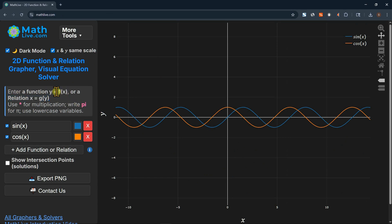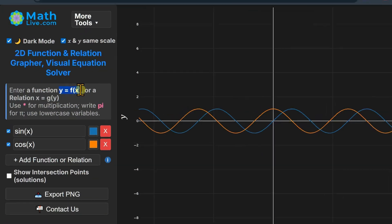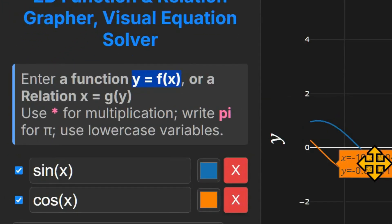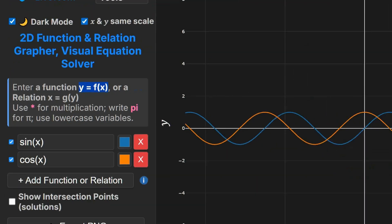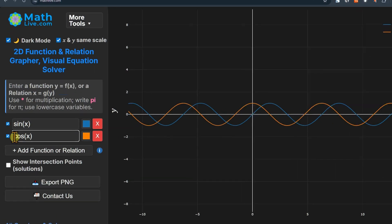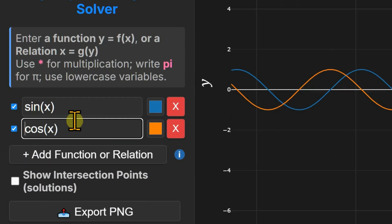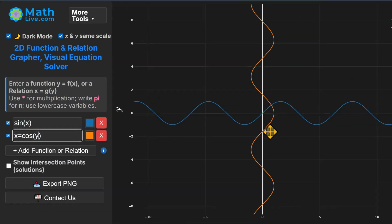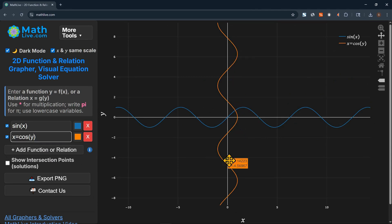MathLive plots both functions, where for every x, there is a single y. For every x here, those are functions. For every x, there is a single y. All relations, for example, if we convert this to a relation, it becomes x equal cosine y. And now for every x, there is multiple y's. So this is not a function. The orange graph is not a function. It is a relation.